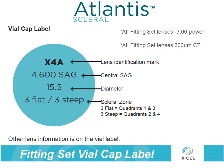The lens vials are labeled with four parameters. The top line is an alphanumeric code that identifies the diagnostic lens's diameter, sag, and edge profile in just three characters, making lab communication and chart notation easy and efficient. The second line denotes the sagittal depth of the lens, the third line the diameter, and the fourth line describes the scleral zone. The scleral zone is described in terms of the flat and steep meridian of the toric haptic. Although not notated on the vial top, it is helpful to know that all diagnostic lenses have a power of minus three diopters and a central thickness of 300 microns.